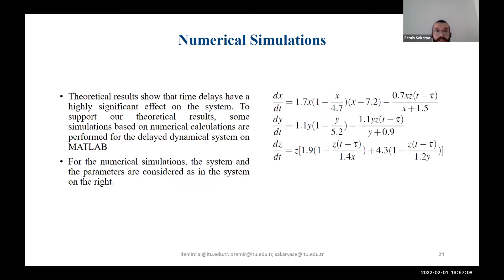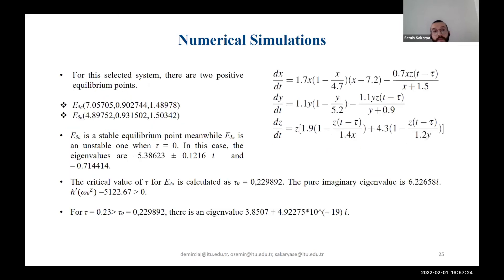To support our theoretical results, we perform numerical simulations in MATLAB. We select some parameters and establish our selected system. For the selected system, we find two different positive equilibrium E3 points: E3a is a stable equilibrium point, while E3b is an unstable one. We also calculated the critical tau value tau zero for the stable equilibrium point E3a.